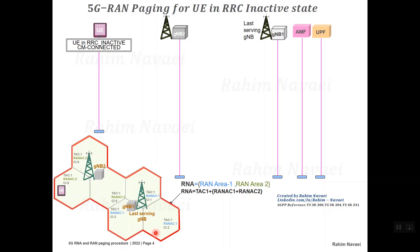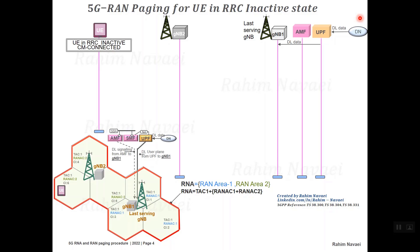When the UE is in cell 6 of gNB2, user plane data arrives at the UPF. Since from the core point of view the UE is connected, the downlink data is sent to the last serving gNB, which is gNB1. gNB1, as the last serving gNB, knows the UE is in RRC inactive state and needs to be paged in all cells within the RNA.